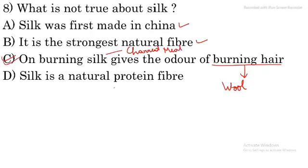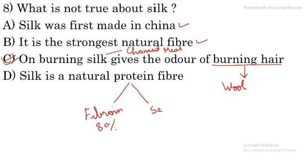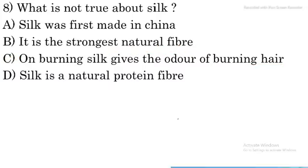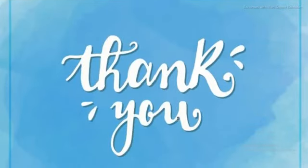Silk is a natural protein fiber — this is true, because silk is a protein fiber. In its composition, we have fibroin at 80% and sericin at 20%. So silk is indeed a natural fiber. Thank you so much for watching my video. If you like my video, then please like, share, and subscribe. Keep watching.